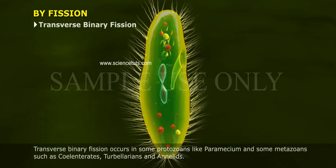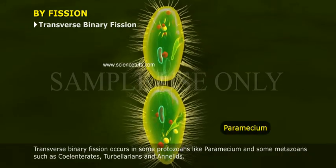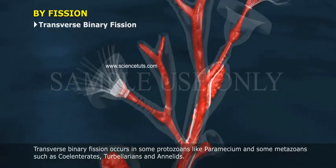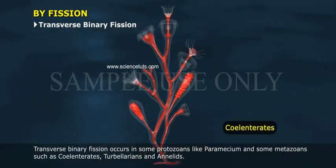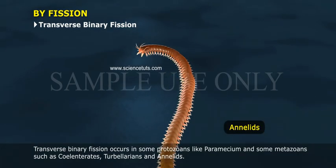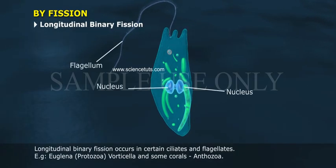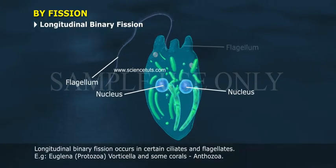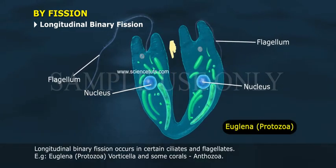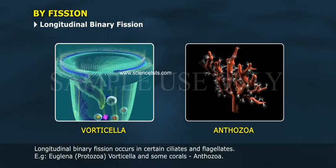Transverse binary fission occurs in some protozoans like Paramecium and some metazoans such as coelenterates, cubularians, and annelids. Longitudinal binary fission occurs in certain ciliates and flagellates, for example Euglena, Vorticella, and some corals.